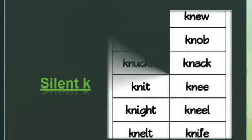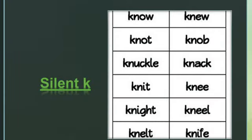The next one is silent K. Here are a few words that start with K, but we do not pronounce the K. Just like 'know' — to pronounce K it would be 'kno,' but we read it as 'no.' 'Knew,' 'knot,' 'knob,' 'knuckle,' 'knack,' 'knit,' 'knee,' 'knight,' 'kneel,' 'knelt,' 'knife.' In all these words the letter K is silent.